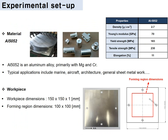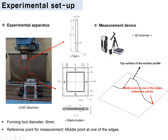The experimental setup is as follows. Aluminum 5052 was employed, with a yield strength of 183 MPa, tensile strength of 230 MPa, and elongation of 11%. Typical applications of this material include marine, aircraft, architecture, and general sheet metal working. The workpiece and holder size is 150 mm × 150 mm, with a forming region of 100 mm × 100 mm and material thickness of 1 mm. A Namsung NR35 three-dimensional CNC machine was used, with a tool radius of 4 mm, and geometry was measured using a 3D scanner.